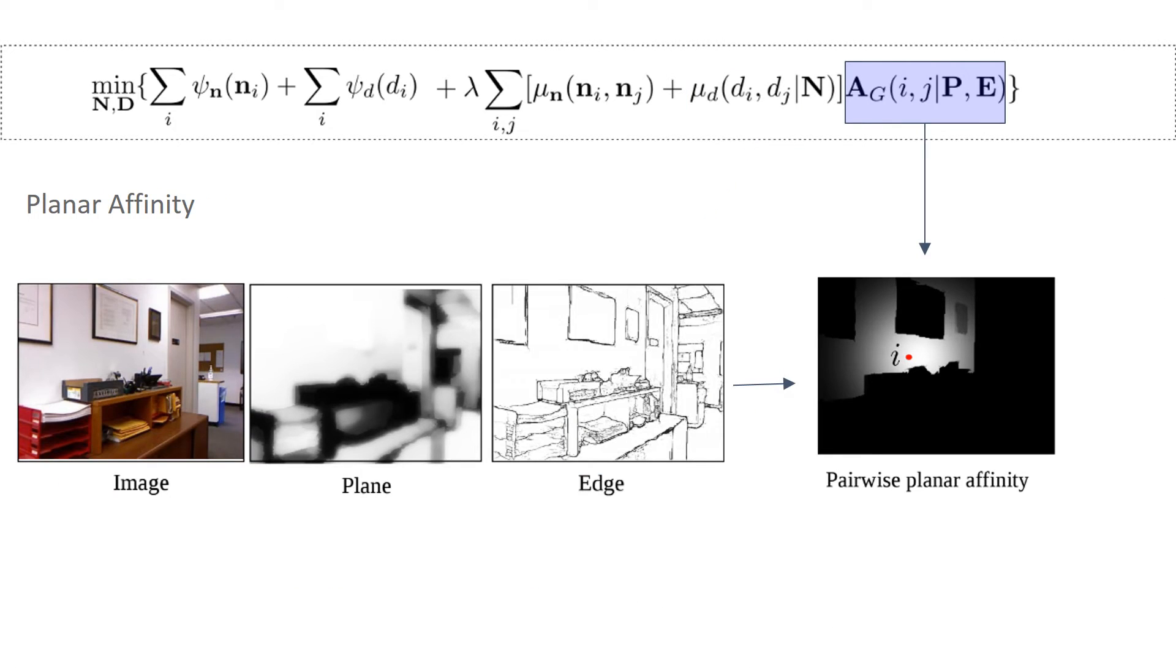For the affinity term, we consider affinity from the predicted plane and edge information. The idea is that two pixels should have high affinity if both of them are inside the planar regions and have no edge in between, while having low affinity otherwise. On the right, we show the pairwise planar affinity for a particular pixel i.